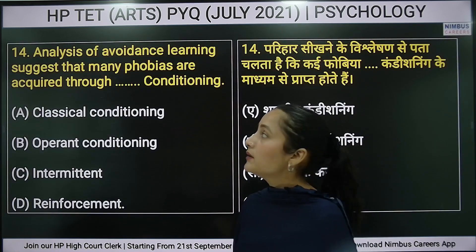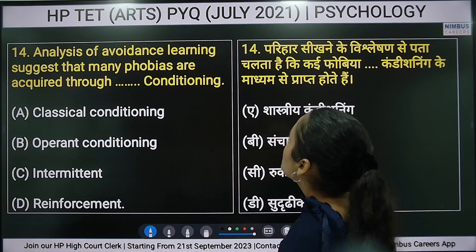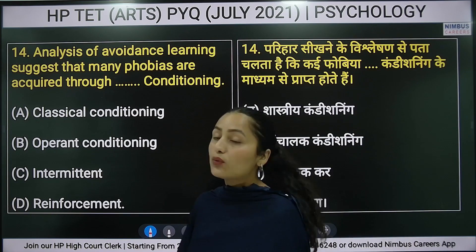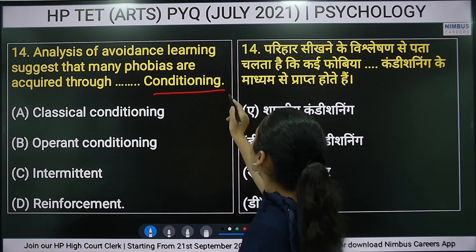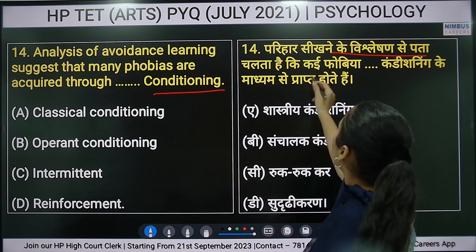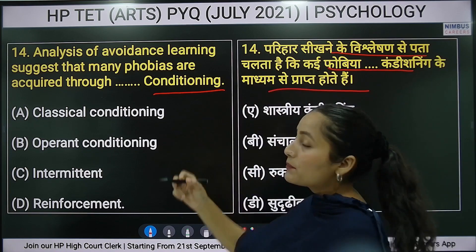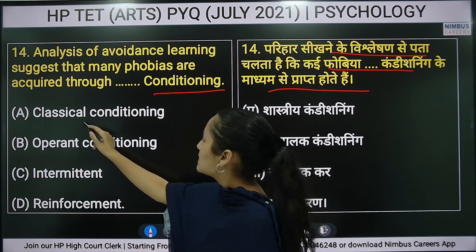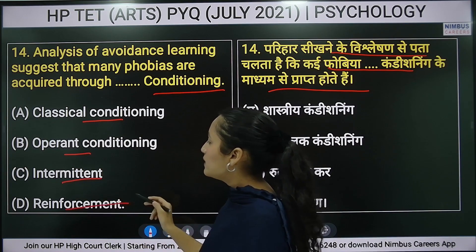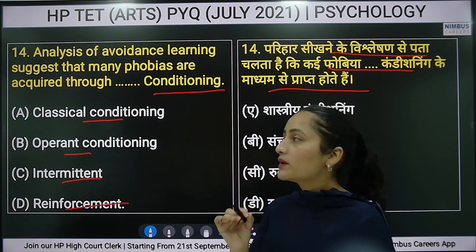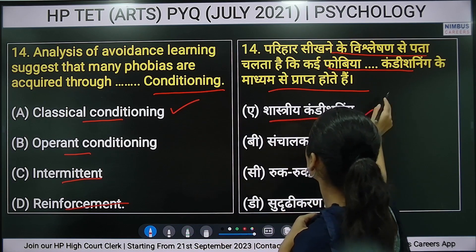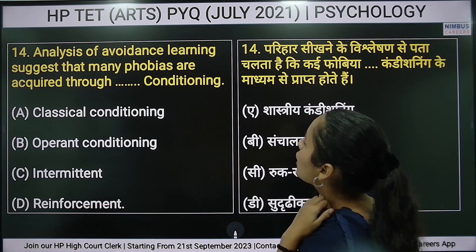Fourteenth question: avoidance learning suggests that many phobias are acquired through what type of conditioning? Options are: operant conditioning, intermittent conditioning, or reinforcement. The right answer is option A.